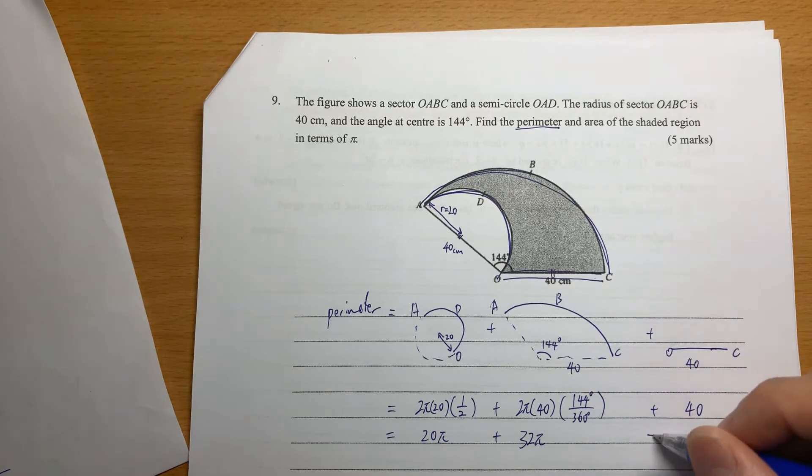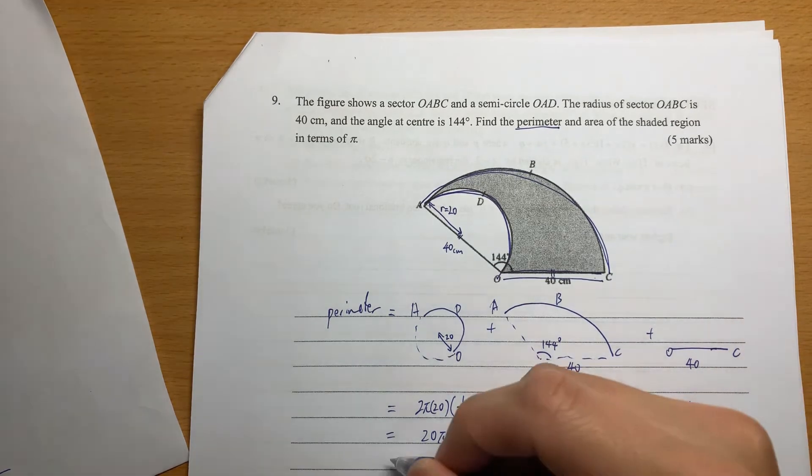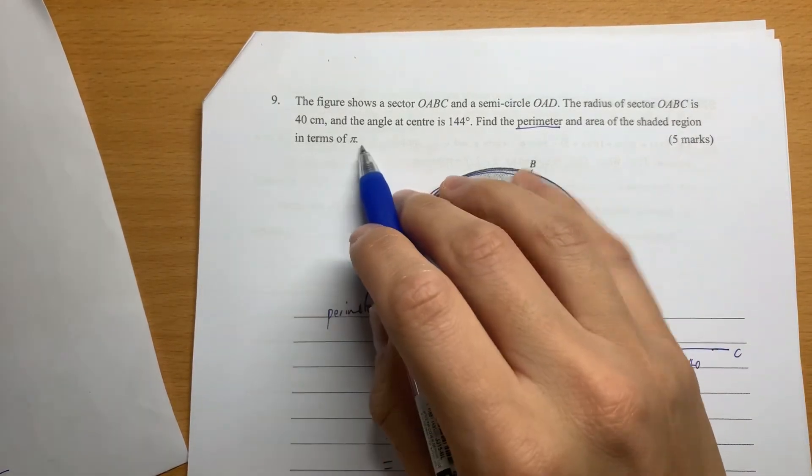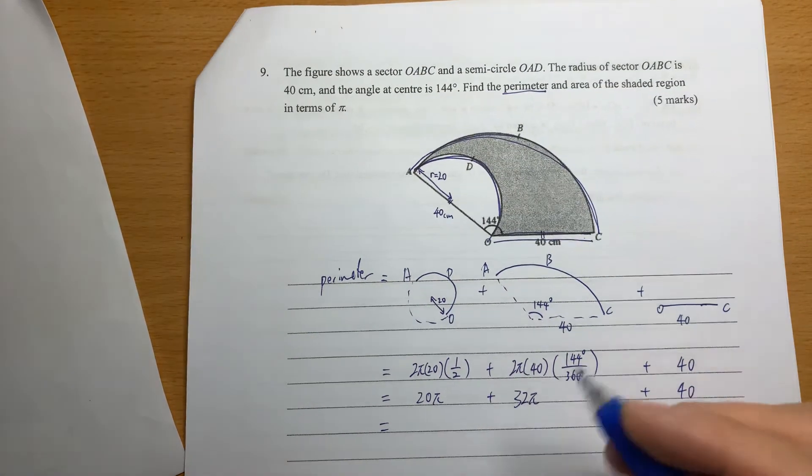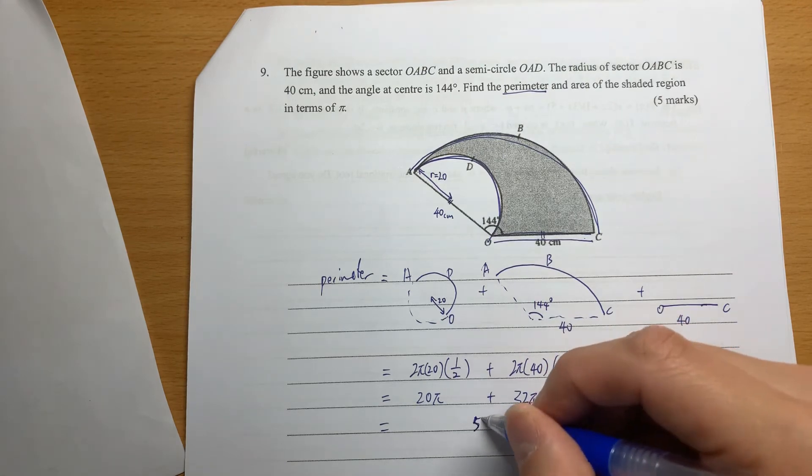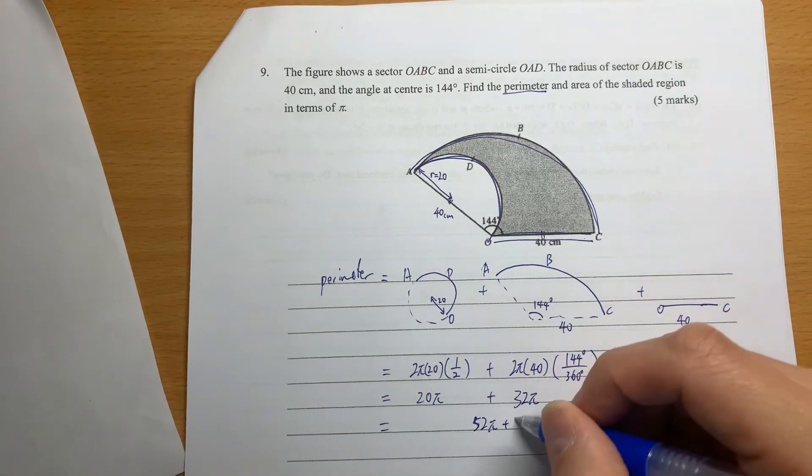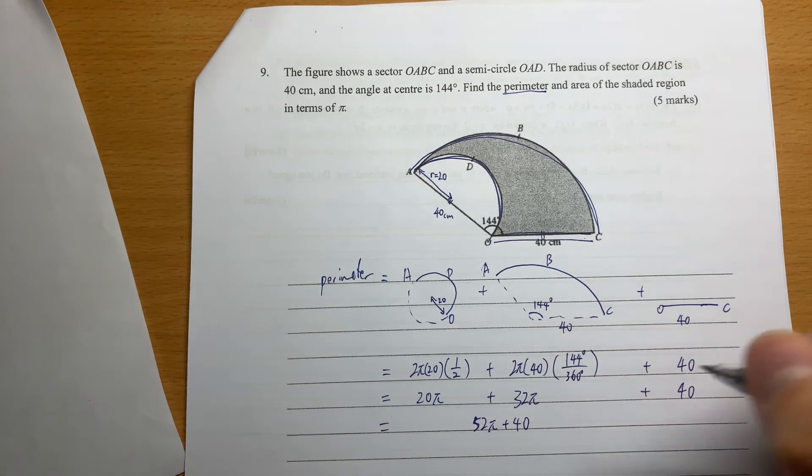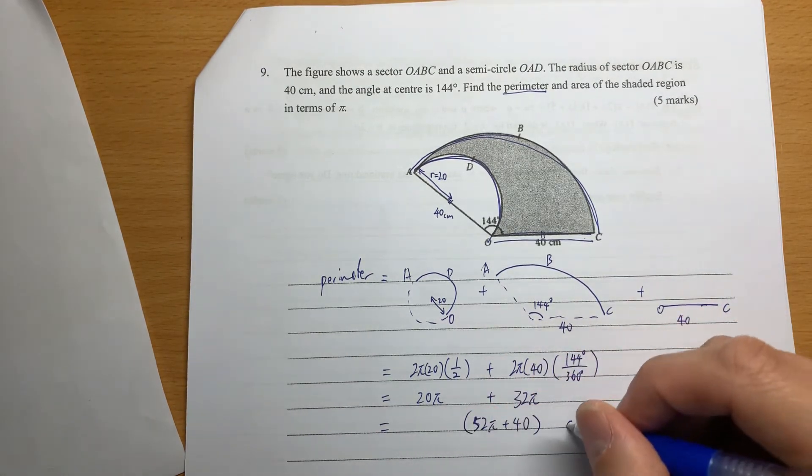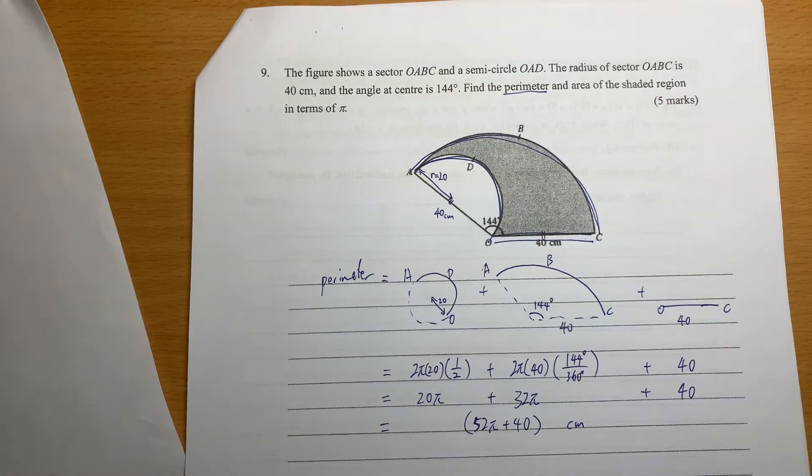And then plus 40. No need to calculate - it's a straight line. They say in terms of π, that means you don't need to use calculator 2 times 3.14 or something. You just need to add them together: 52π plus 40. With π, without π - they're not like terms, you're not going to add them together. So this is the perimeter in cm.